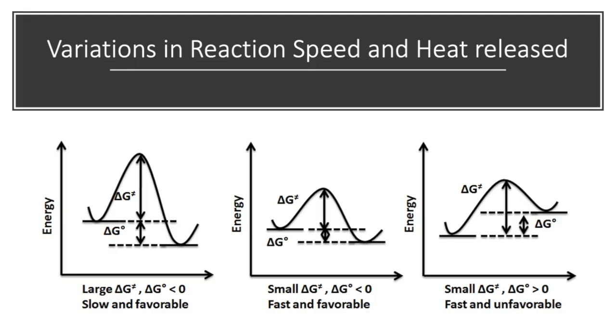So, these are some reaction coordinate diagrams. These are labeled with delta G or free energy, but you can have similar diagrams with delta H. And essentially, the smaller this activation energy from the reactants to the activated complex, the faster that reaction is going to be. And then the bigger this difference down here between where you start and where you end, the more exothermic it is going to be.